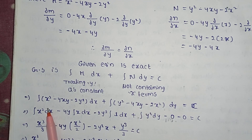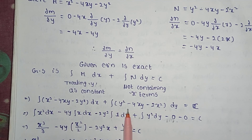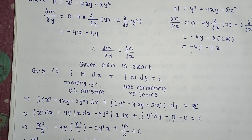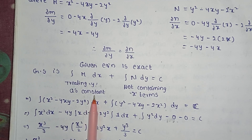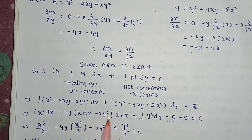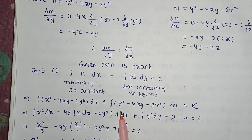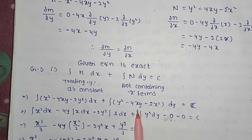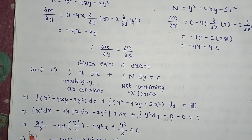The general solution: integral of (x² - 4xy - 2y²) dx plus integral of (y² - 4xy - 2x²) dy equals c. Integrating: x² integrates to x³/3, minus 4y · integral of x dx, minus 2y² · integral of 1 dx, plus integral of y² dy.